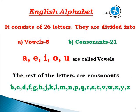Lesson 2 is all about the English alphabet. The English alphabet consists of 26 letters. They are divided into two classes: vowels and consonants. Vowels are 5 in number and consonants are 21 in number. Those 5 letters — A, E, I, O, U — are called vowels, and the rest of the letters are called consonants.